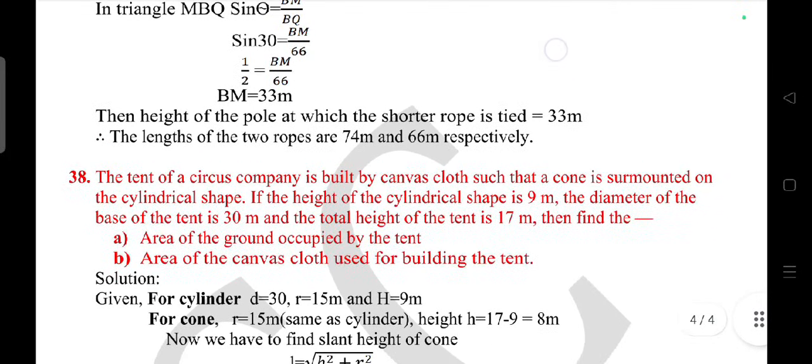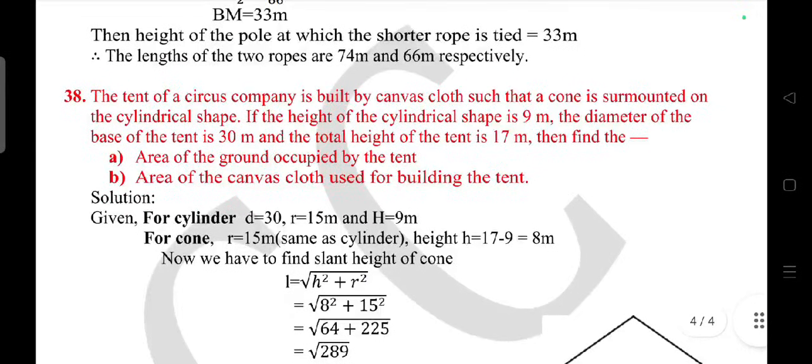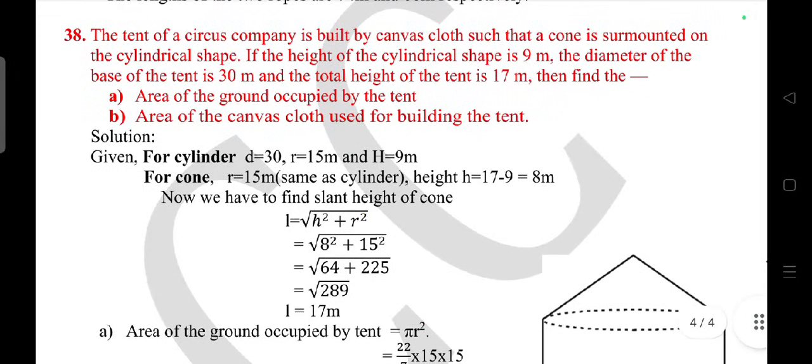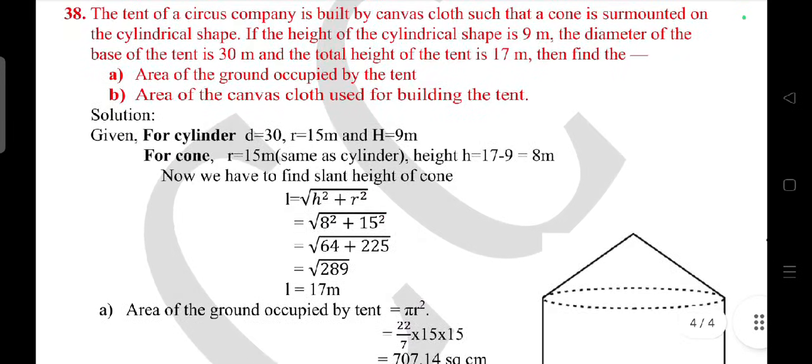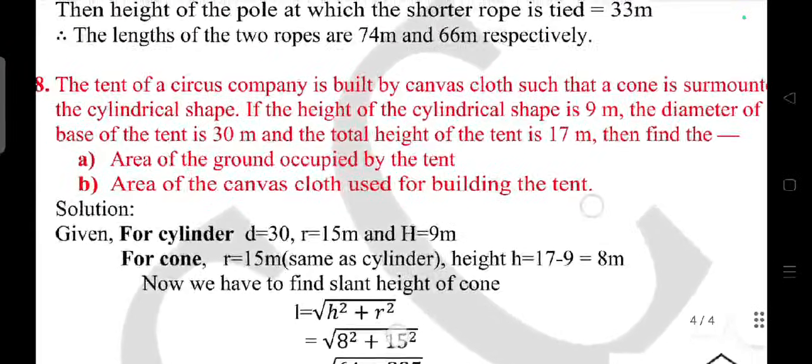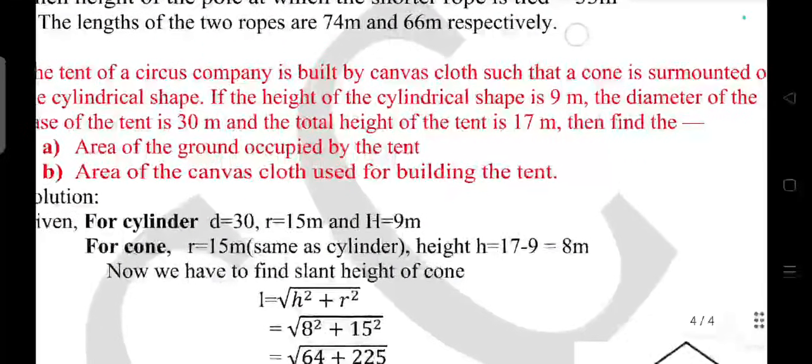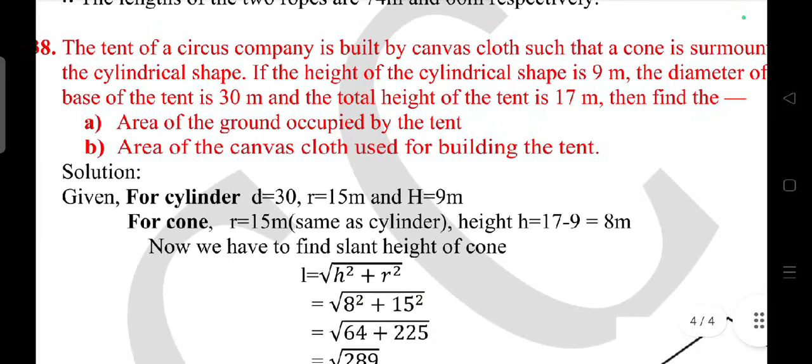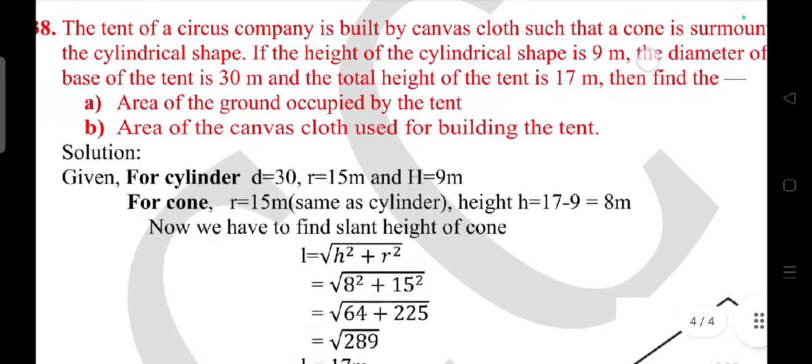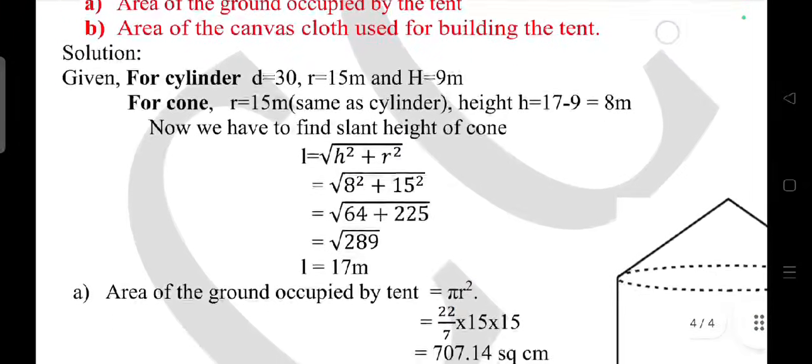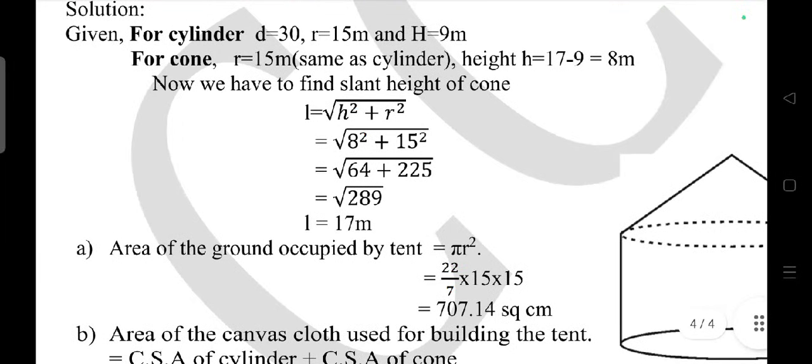The tent of a circus company is built by canvas cloth such that a cone is surmounted on the cylinder shape. If the height of cylinder shape is 9 meters and the diameter of the base of tent is 30 meters and the total height is 20.70 meters, then find the area of ground occupied by the tent and area of canvas cloth used to build the tent. Take answers.